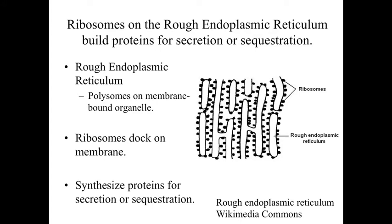The ribosomes are going to be attached onto these membrane-bound structures, docked to the membrane, and as they're synthesizing the proteins, they're essentially going to be injecting the amino acid sequence into the cisterna — into the lumen, into the inside of this membrane-bound rough endoplasmic reticulum. So as the proteins are being formed, they're already going to be stored within these membrane-bound structures of the rough endoplasmic reticulum.